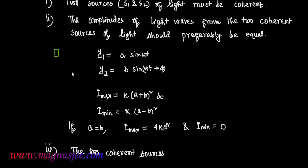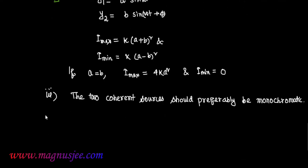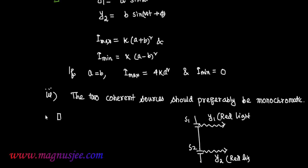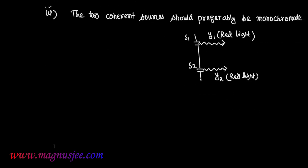Number three condition: the two coherent sources of light should be preferably monochromatic. If source S1 produces red light with equation Y1, then the second source S2 should also produce red light with equation Y2 — that is, same wavelength. If red light is replaced by blue light, the other interfering wave should also be blue. The two coherent sources should be preferably monochromatic.